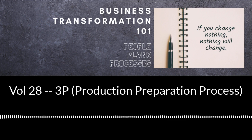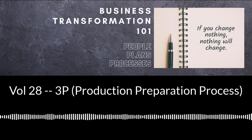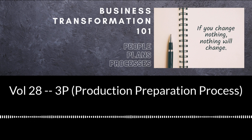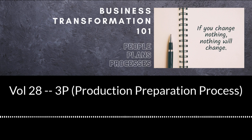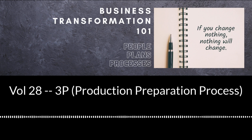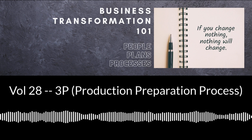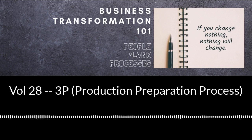3P is the process of developing an integrated product and production system that will meet the requirements of product design quality at the necessary production volume at the target cost by the target date. Unlike Kaizens, which are generally aimed at improving existing processes, a 3P event is essentially starting with a clean sheet of paper and utilizing lean principles from the inception of the project.